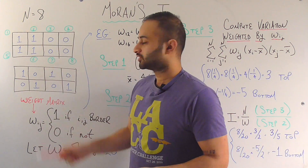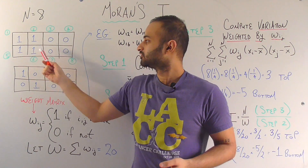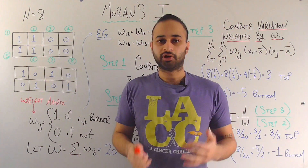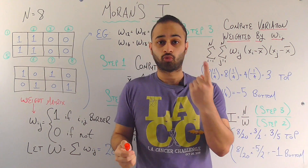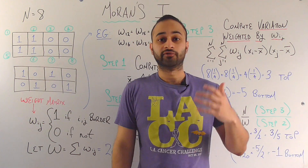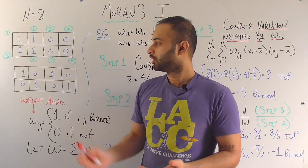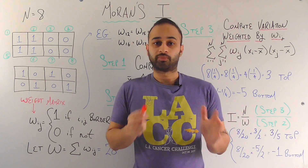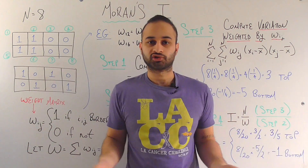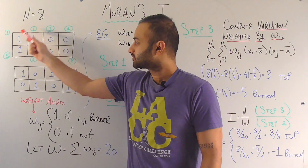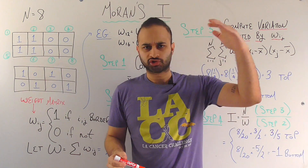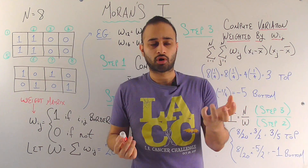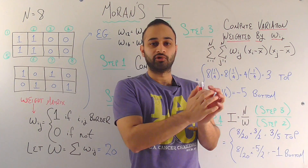In the first scenario, the states are numbered one through eight. There is very obvious clustering: all states that voted Republican, with ones, are to the left, and all states that voted Democrat, with zeros, are to the right. We would expect Moran's I to be rather high. Note that Moran's I is bounded between negative one and one so the interpretation doesn't change based on units. This case represents strong positive spatial correlation — states with similar voting patterns cluster together.